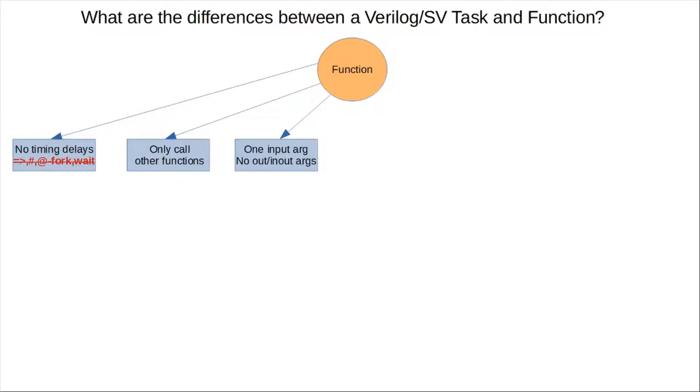A function should at least have one input argument and cannot have inout or output arguments. A function typically only returns one value unless it is a type void. Then, of course, no return value is required. It can have many reference arguments or inputs.